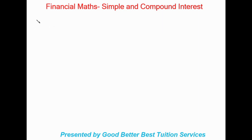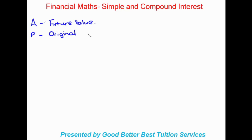The different letters in our equations represent specific values. 'A' is going to be what we call our future value, represented by the capital letter A. 'P' represents our original amount — the amount of money we will invest. The future value 'A' is how much money we've made after our investment is complete after a certain amount of time.